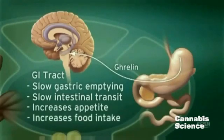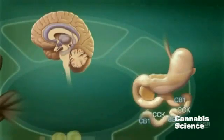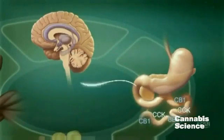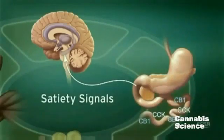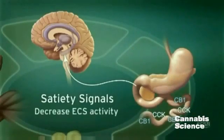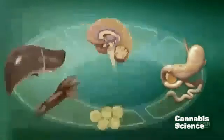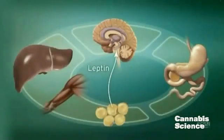After eating, cholecystokinin in the duodenum triggers satiety signals. Subsequently, ECS activity is decreased through suppression of CB1 expression. An increase in the adiposity hormone leptin decreases endocannabinoid levels in the hypothalamus and decreases food intake.